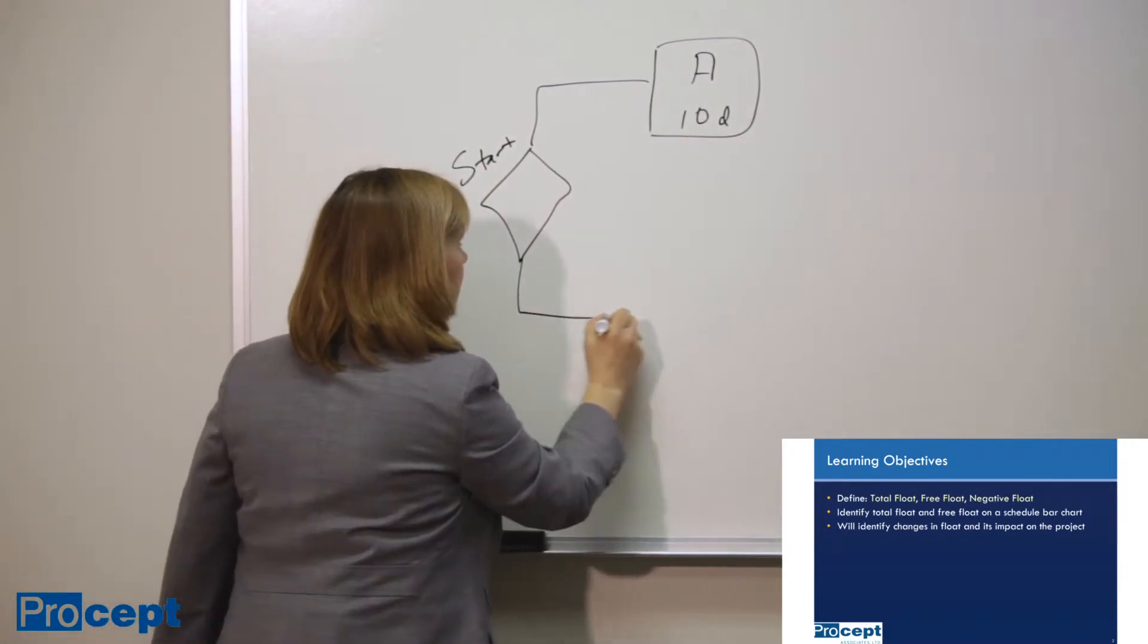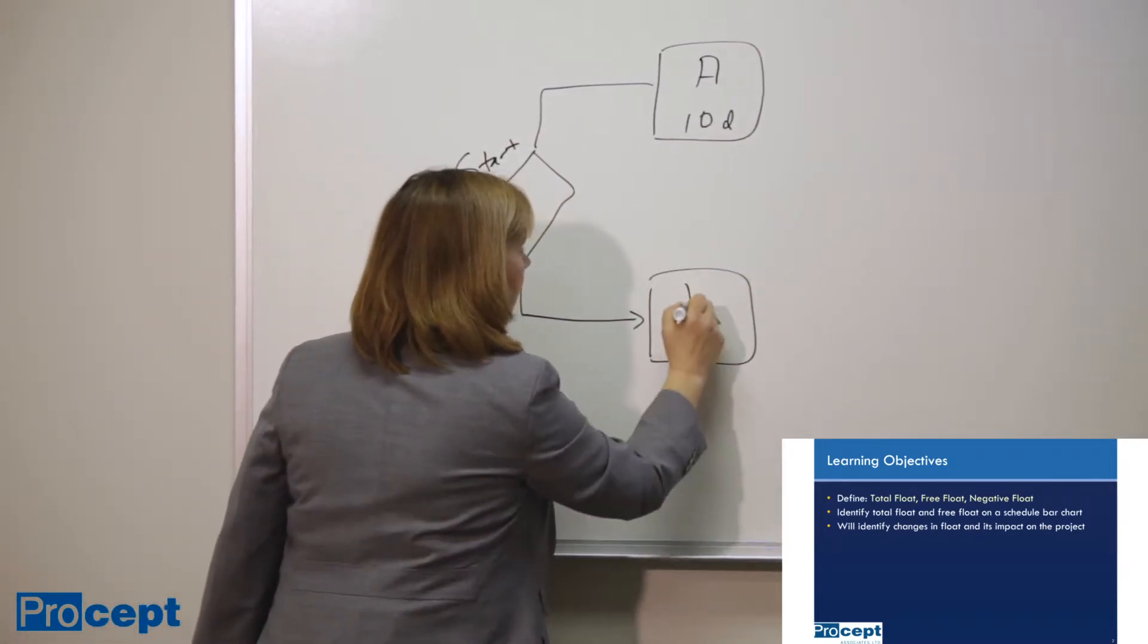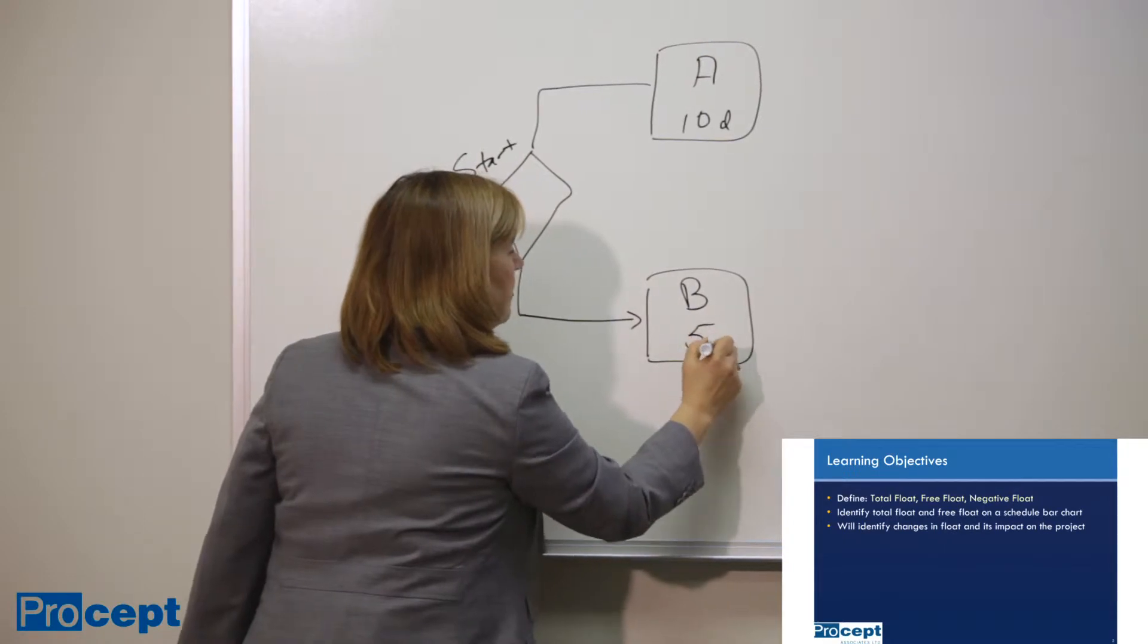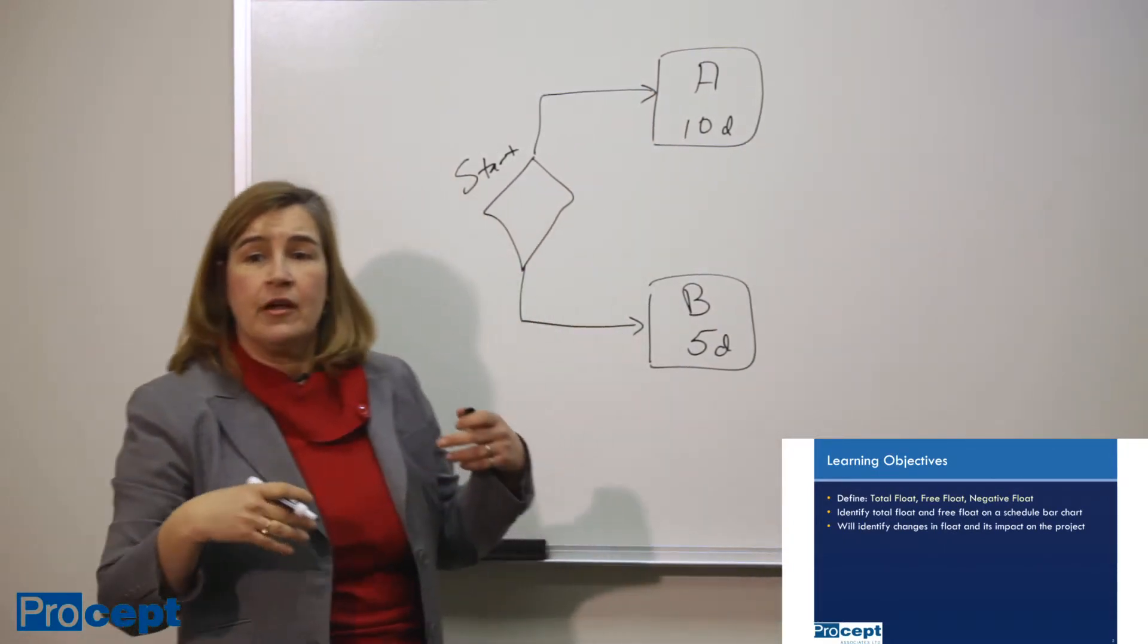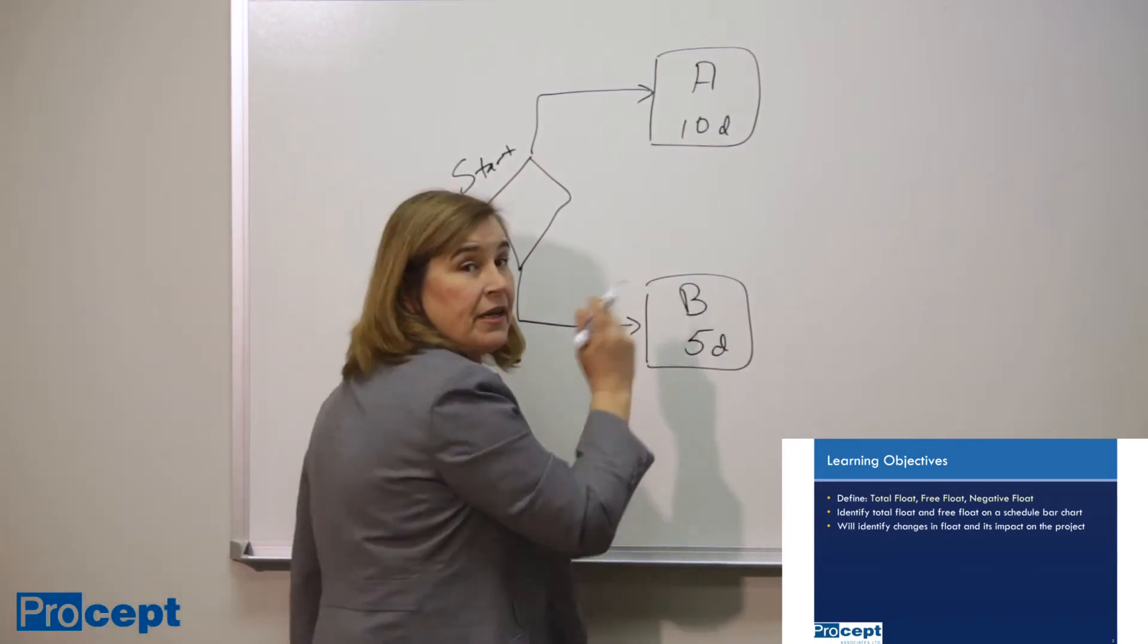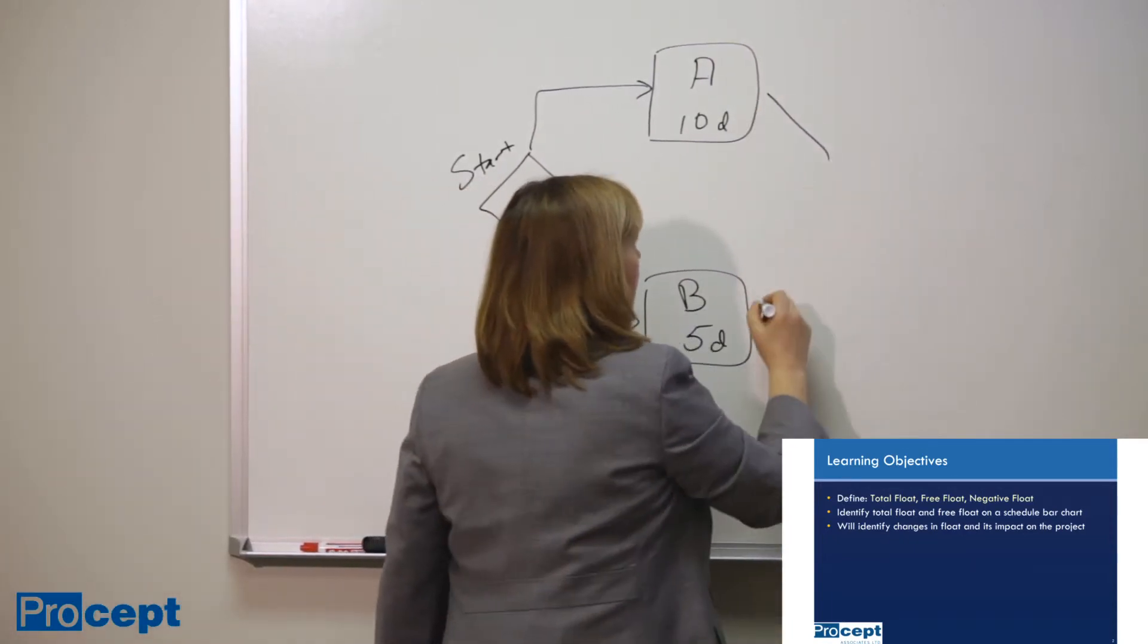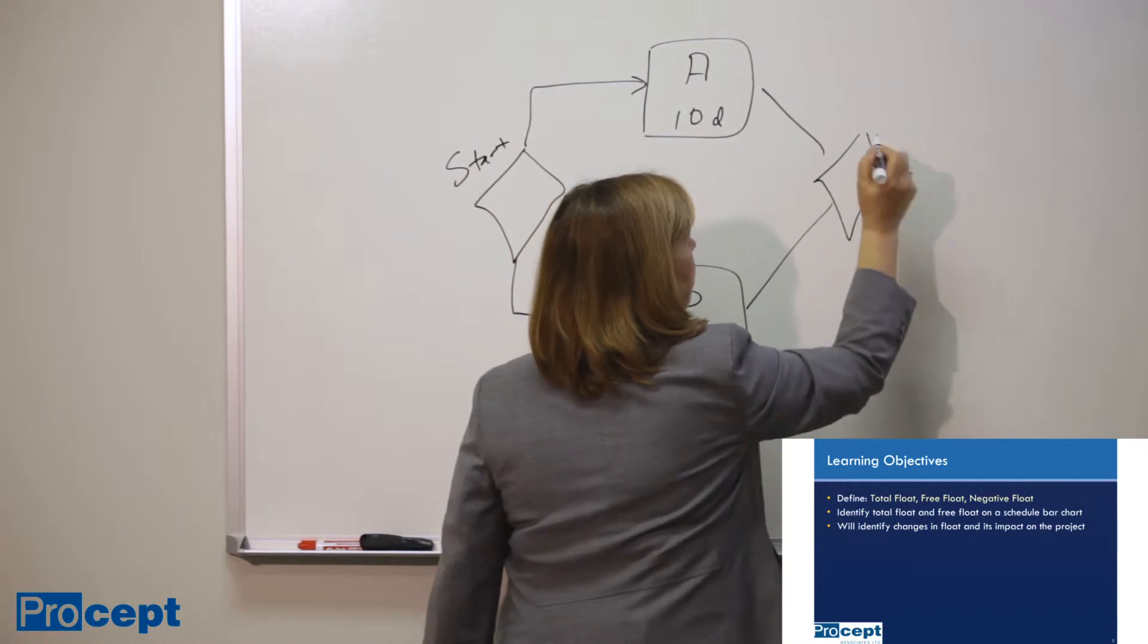Now we also have activity B, and it's 5 days long. And at the end of each of these activities, which are happening in parallel, we have a project finish milestone.